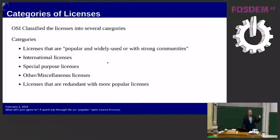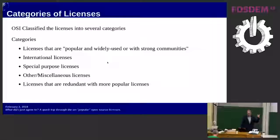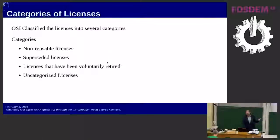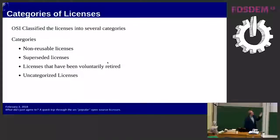There's actually a lot of other licenses besides those. If you dig a little bit deeper, they've got other categories too — just informational about how these things are. There are international licenses, special purpose licenses, miscellaneous licenses, uncategorized licenses, licenses that have been voluntarily retired. A lot of these categories are kind of meant to indicate to people: don't use these — superseded, non-reusable.